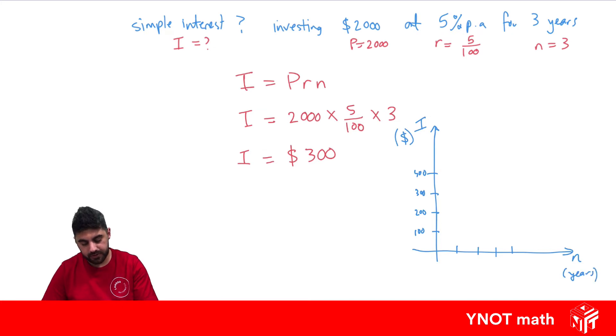We should note that we've got one, two, three, four, five years. So we know at no years we'll have no interest at the start, and we know after three years we've got $300 of interest, which is going to be there. And simple interest just forms a straight line, so we can join those together and get our straight line graph.